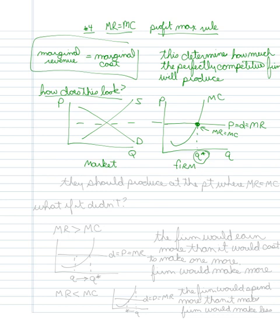They should produce at the point where marginal revenue equals marginal cost. Now what if it didn't?